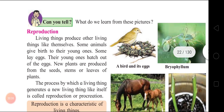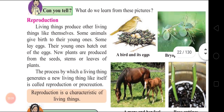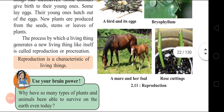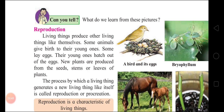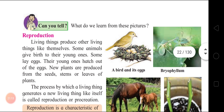Can you tell what we learn from these pictures? A bird and its eggs, a mare and her foal, rose cuttings. Living things produce other living things like themselves. Some animals give birth to their young ones; some lay eggs and their young ones hatch out. New plants are produced from the seeds, stems, or leaves of plants. The bird lays eggs and after hatching, small birds come out.